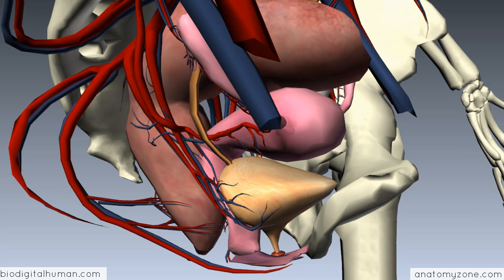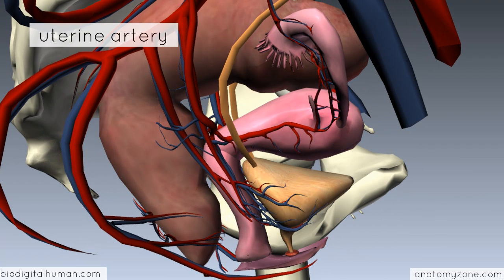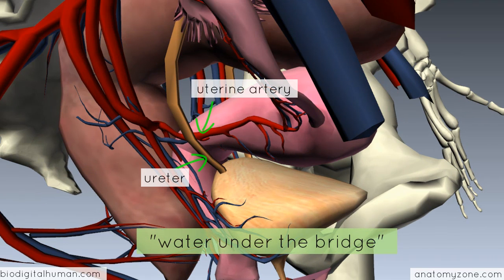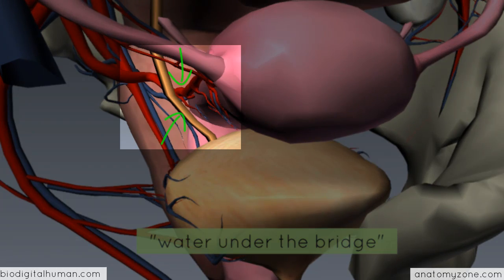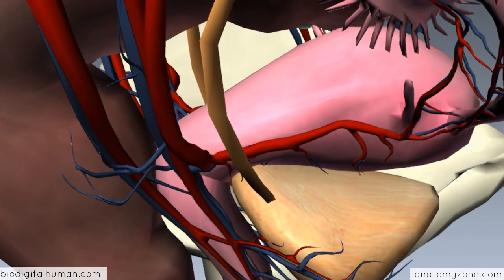In terms of the blood supply of the uterus, it's supplied by the uterine artery. Rotating the model slightly to the side, you can see this artery running along the length of the uterus. It arises usually from the anterior division of the internal iliac artery and runs in the base of the broad ligament. Importantly, the uterine artery crosses above the ureter — remember the mnemonic 'water under the bridge' — so the ureters run underneath the uterine artery to enter posteriorly into the bladder. As it ascends along the uterus, it forms anastomoses with the ovarian arteries above.